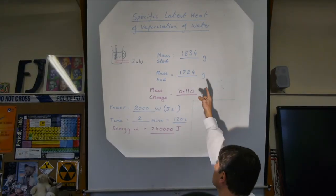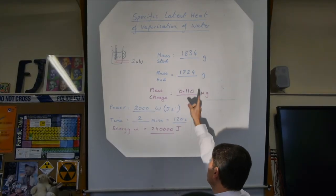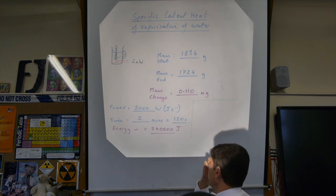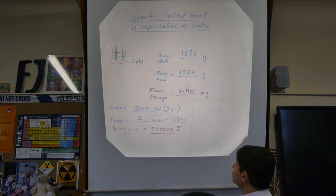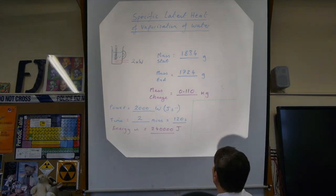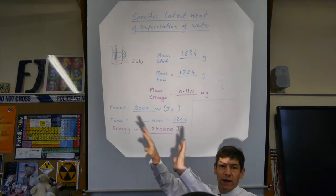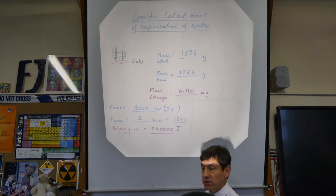So I've put the mass at the start in from the experiment, the mass at the end, taken them away and converted it to kilograms. So we lost 110 grams of water and that's now condensed on the windows of the laboratory.